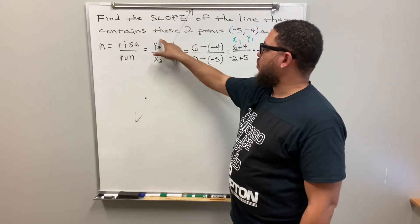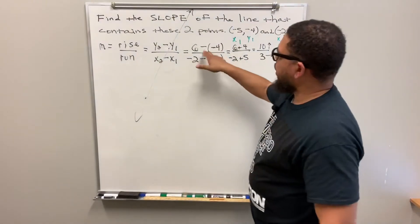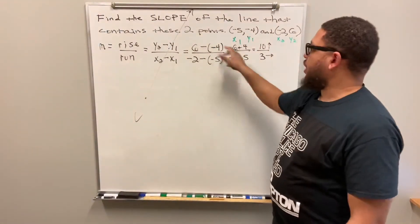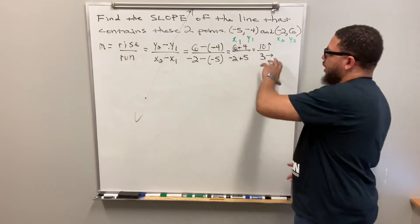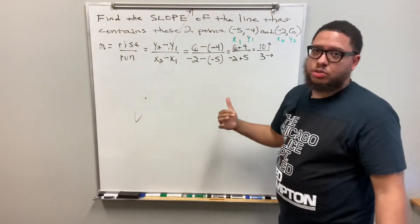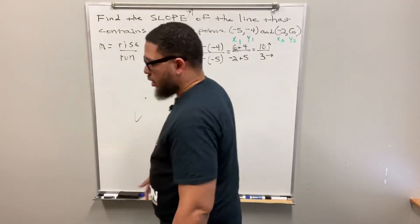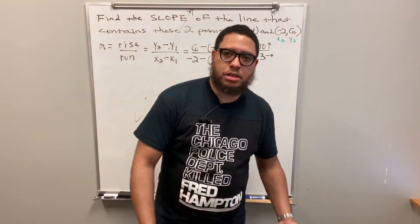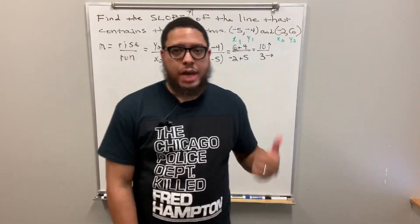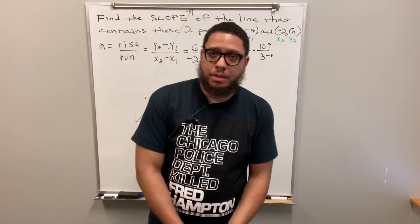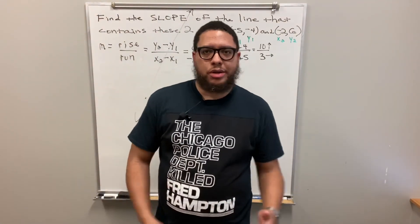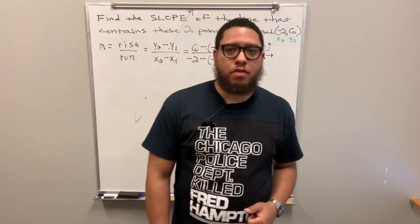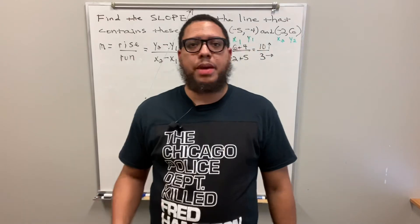Memorize this formula and know how to put the numbers in the right places — you need four numbers. Don't forget: when subtracting a negative, don't leave out any of the minus signs; double negatives become addition. Always reduce your fractions if you can. This slope we couldn't reduce, so we leave it as ten over three. Please like and share the video, subscribe to the channel, and remember — there's all this math all around. Peace.